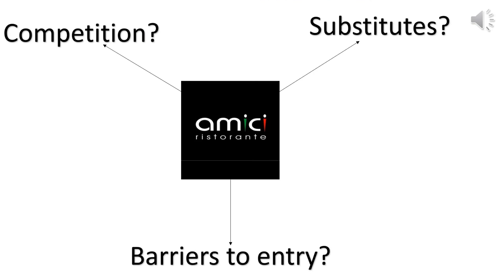Lastly, I have used Porter's Five Forces model to analyse the competitiveness in the local market. There are two other Italian restaurants in the market. However, on TripAdvisor, the other competitors have better reviews than Amici and one is ranked first on TripAdvisor. In this market, there are a lot of substitutes — for example, you can substitute Italian for other cuisines such as Indian, and there is also a lot of food in the market as well as takeaways.